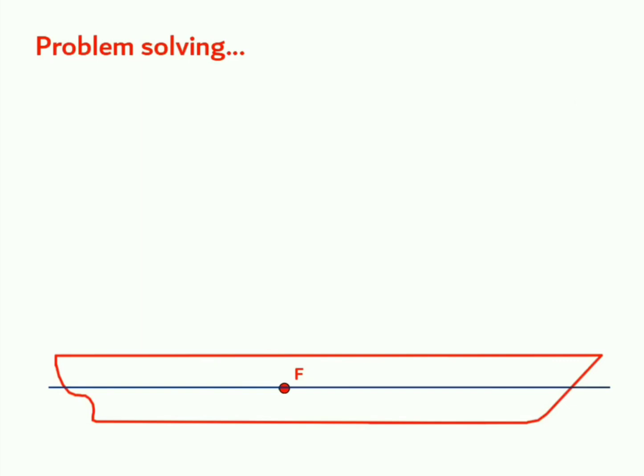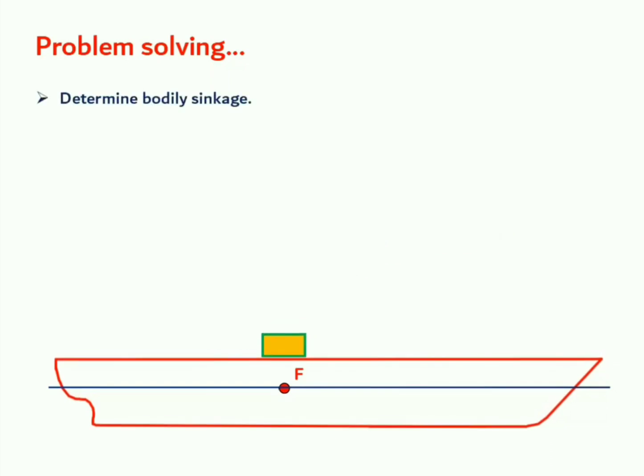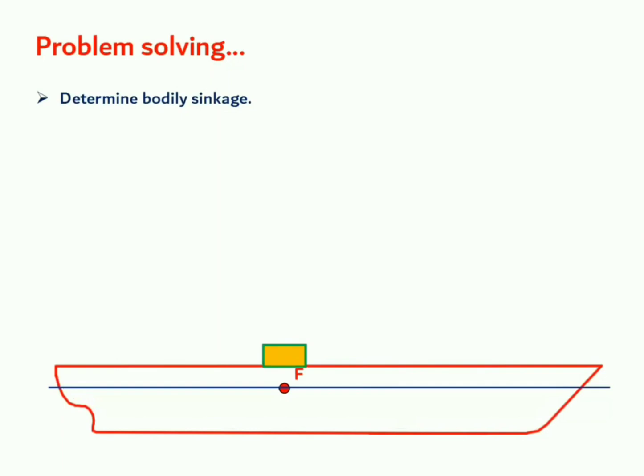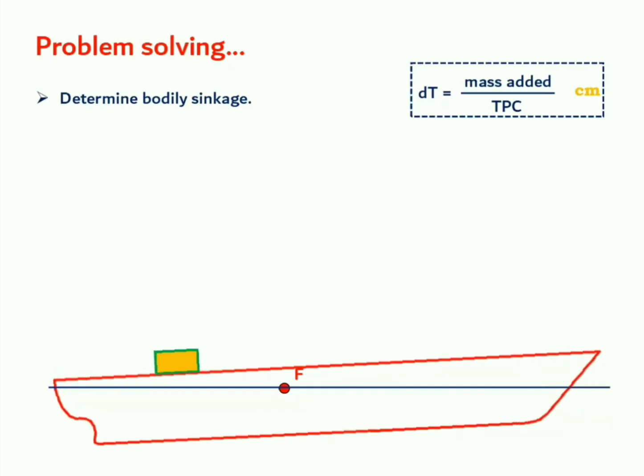Let us now try to understand how exactly you will be working upon several problems. Let's say you have been given with a case where you are adding any mass onto the ship. We will first be determining the bodily sinkage all because of addition of that mass onto the centre of flotation. This is calculated by m upon TPC, where m is the magnitude of mass added. This gives you the change in draft in centimeters. We will now be shifting that mass to its final designated position. We will see how much distance it covers in that direction and we will then determine the change of trim.